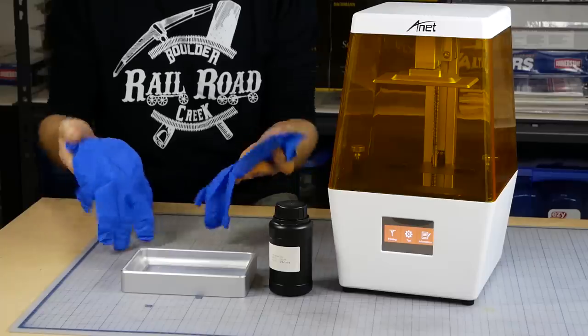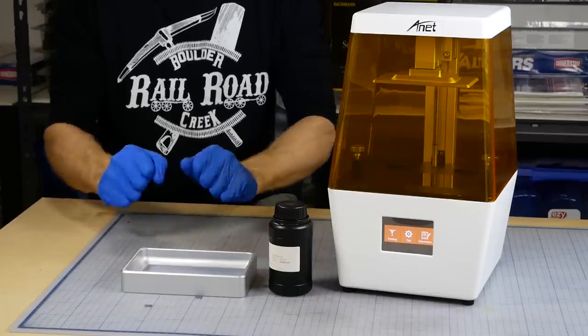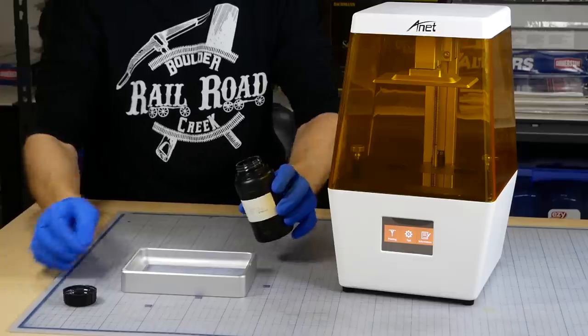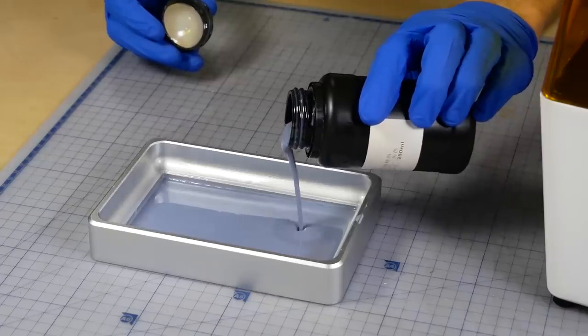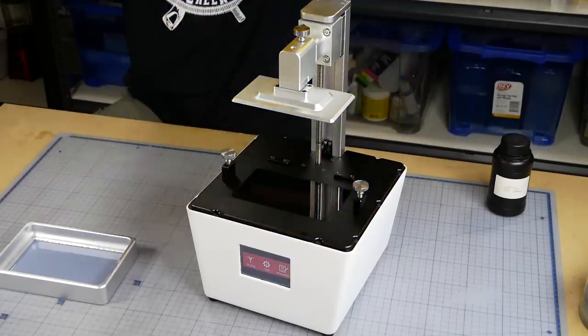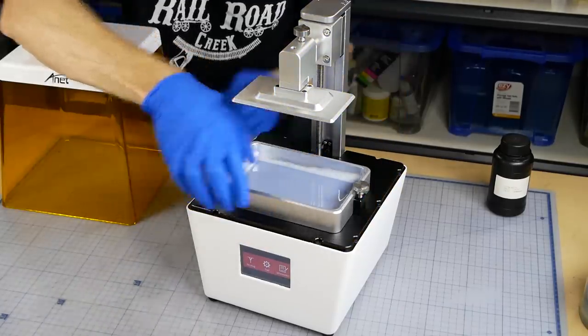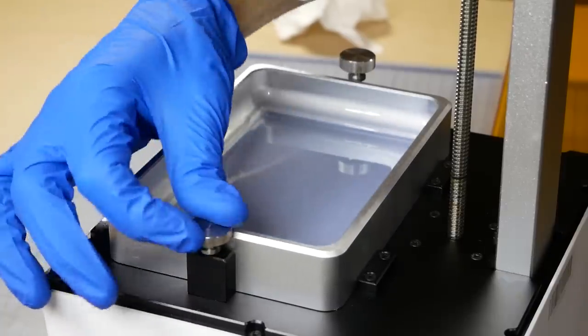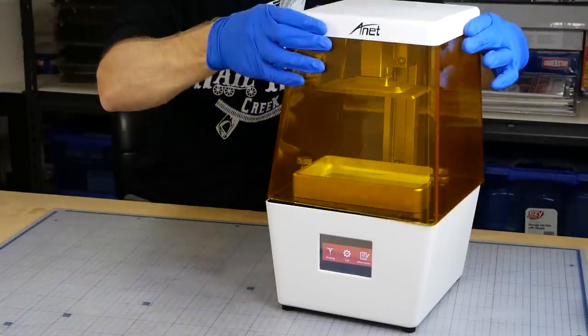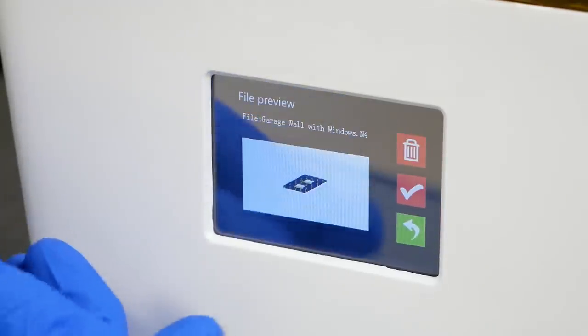Something to be wary of when using the UV resin is that it's toxic in its uncured state, so definitely wear gloves. You also don't need to fill the vat right up; only a small amount of resin is necessary. Once the printer is set up and the bed leveled, which only takes a couple of minutes, I can install the vat, tighten the locking screws, and place the cover back on.